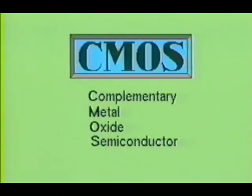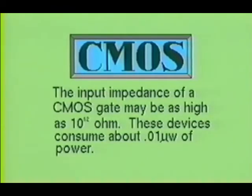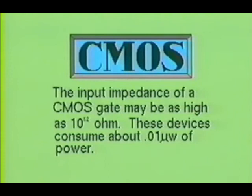Another commonly found logic family is the CMOS family. CMOS ICs are constructed with complementary metal oxide semiconductor devices. The insulated gate in the CMOS device provides a very high input impedance, causing the device to consume very small amounts of power. The power consumed by a typical CMOS gate will be about 0.01 microwatts, making CMOS ideally suited for battery-operated circuits.